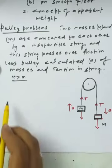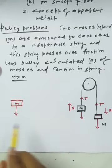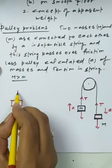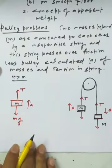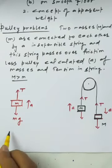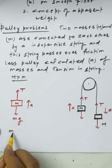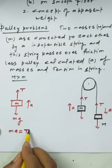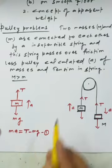Using FBD for the small mass m: weight mg acts downward, tension T acts upward. Since the mass moves upward, applying Newton's second law, the net force gives us equation 1: T - mg = ma.